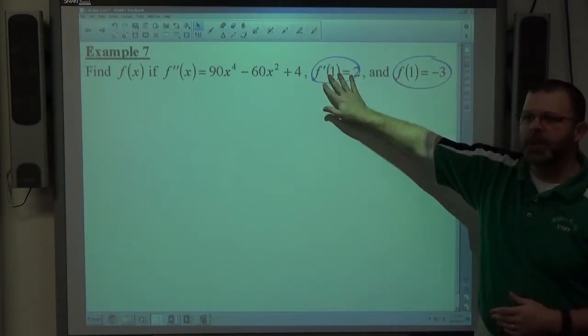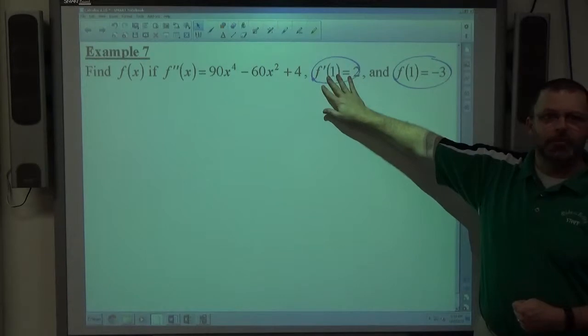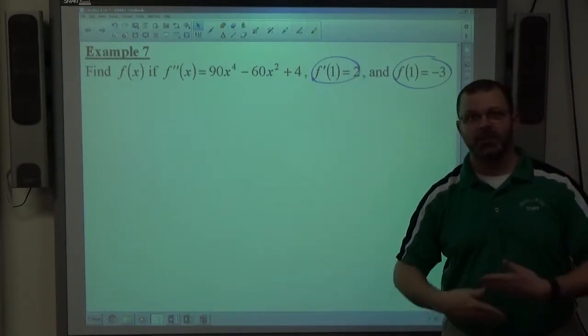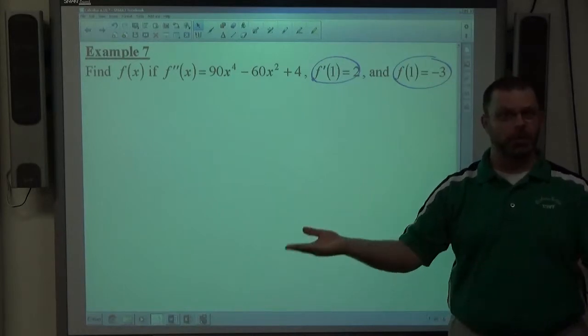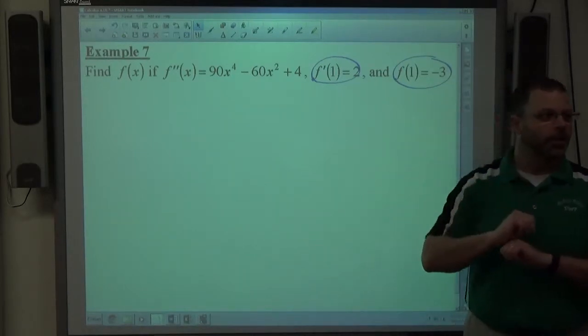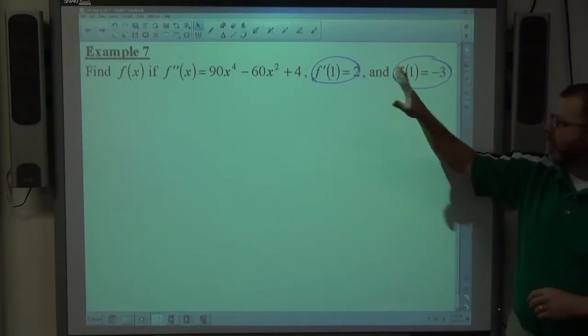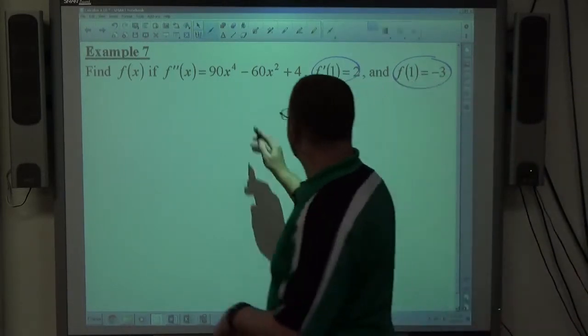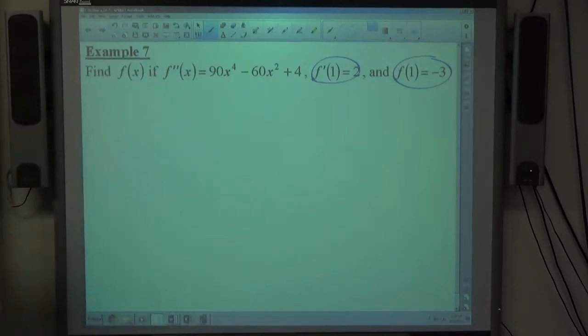So the fact that they told me something about f prime, that allows me to find the constant for f prime. Once I've found the constant for f prime, now it's a number instead of a c, so then I can get a plus c on f again, or you can do plus d if you don't want to have the same letter in the same problem. And then once I get the f of x, I can figure out the constant there. So let's go ahead and do this. It's just a polynomial function, so it's not hard to deal with.